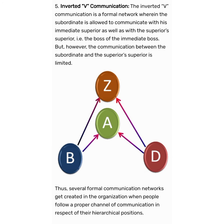The several formal communication networks get created in the organization when people follow proper channels of communication in respect of their hierarchical position. The chain network, wheel network, circular network, free flow network, and inverted V network — these are the important networks used in formal communication. Thank you.